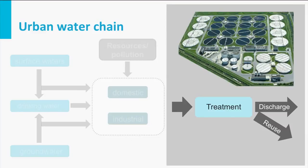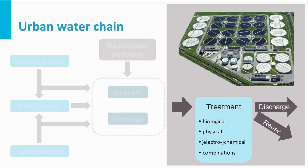The collected sewage is treated at a sewage treatment plant or wastewater treatment plant. The sewage treatment plant consists of several functional units, each targeting a specific group of pollutants. Such a unit may consist of physical treatment, chemical treatment, biological treatment, electrochemical treatment, or combinations of these types of treatments.